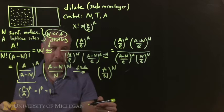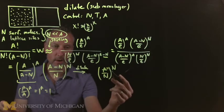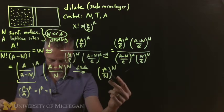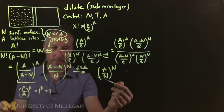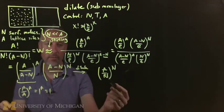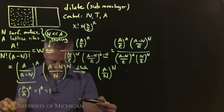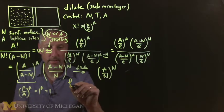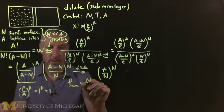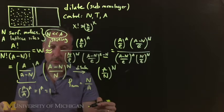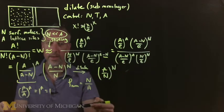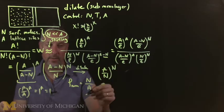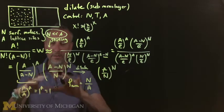So what is this? This is the number of lattice sites divided by the number of molecules — a little bit like the inverse of the number density. The number density would be the number of molecules divided by the number of sites, so this is like 1 over the density. In any case, you see that it's basically A^N, though I'm going to leave the denominator N in here since this is an approximation.